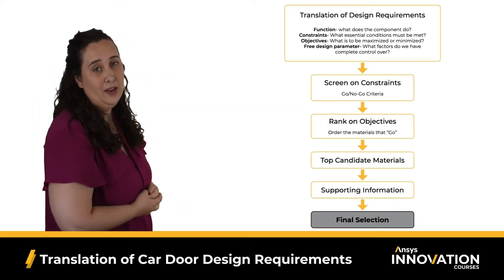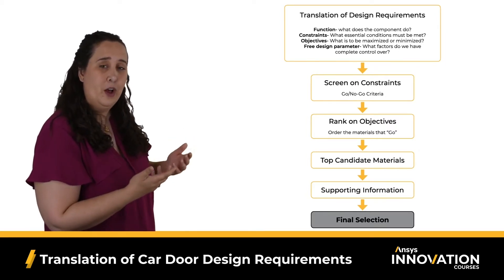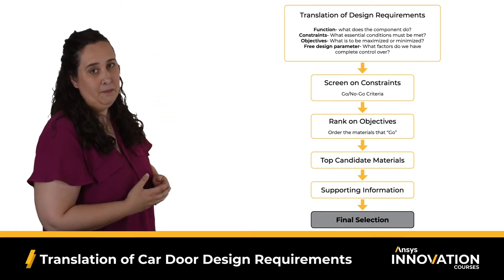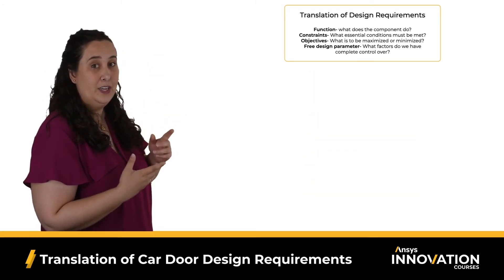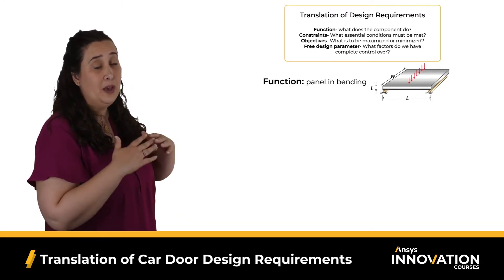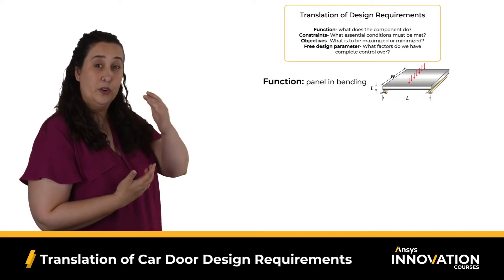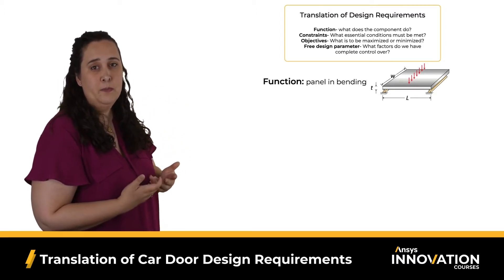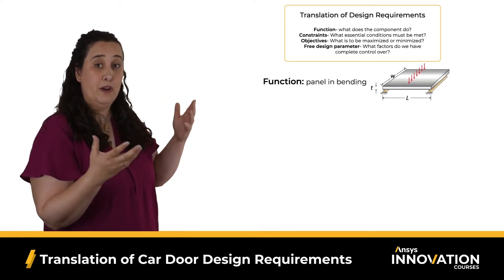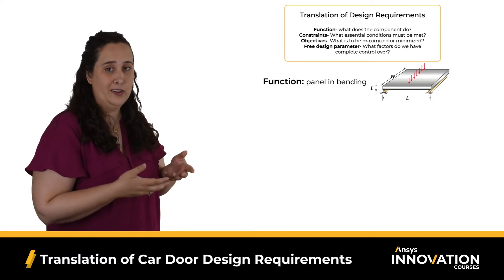When starting a selection, we want to use the Ashby selection methodology shown here. While this example is more complex than others we've done in this course series, the main steps are the same. So we'll start with translation. The function of a car door can be considered to be a panel in bending that's limited by stiffness — we wouldn't want the car door to flex too much during use. While strength is important here, a lot of strength will actually be provided by the frame of the car, so we can just use strength as a constraint.